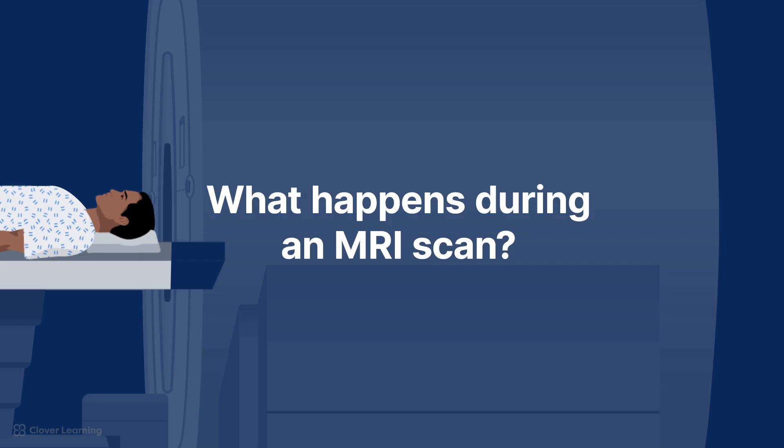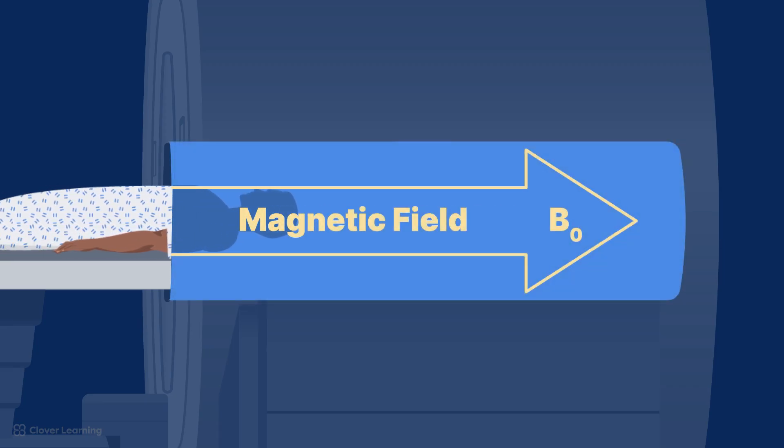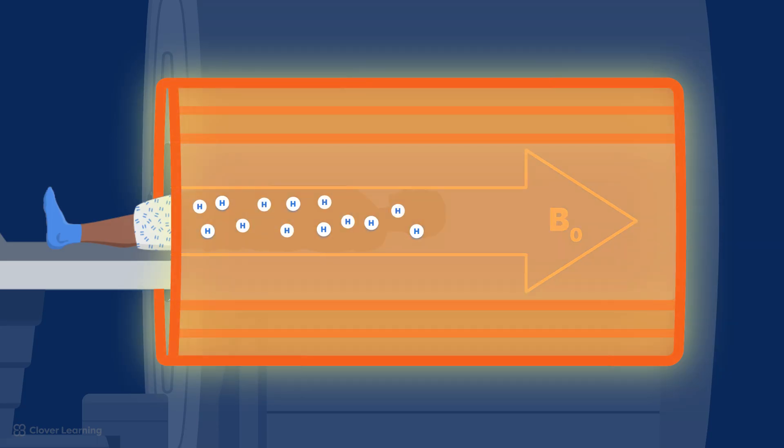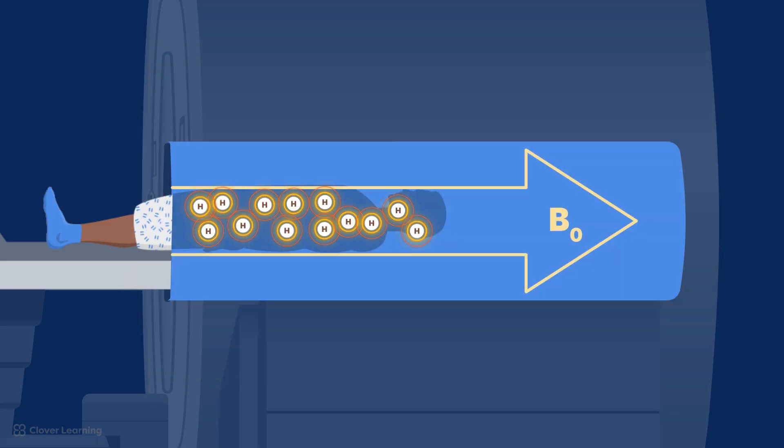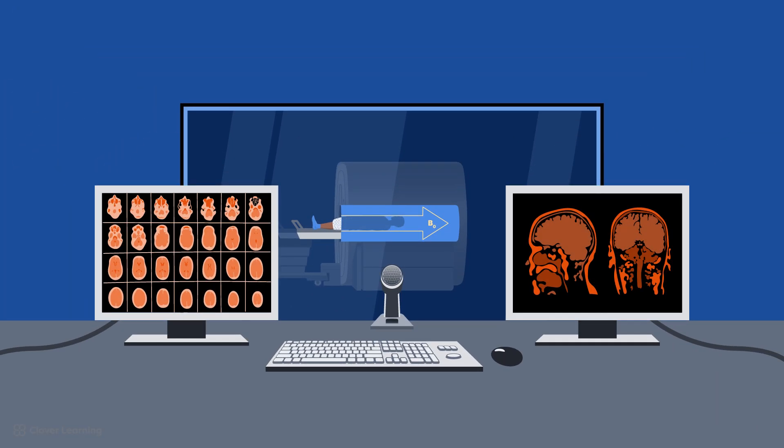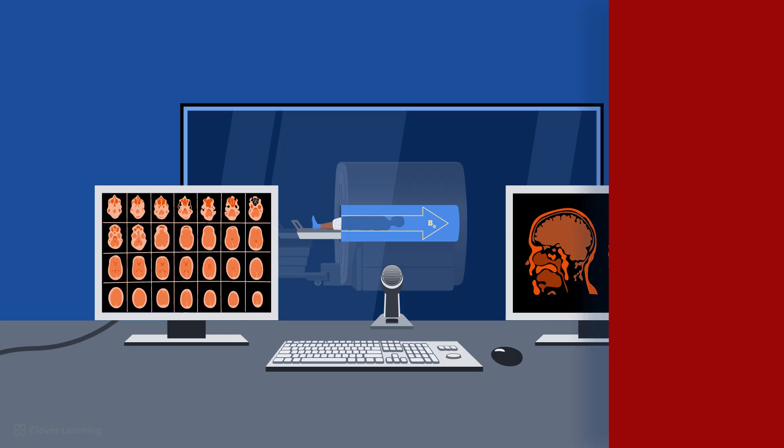So, what happens during an MRI scan? The patient is placed within the bore, which contains the magnetic field, B sub-zero. The hydrogen nuclei in the patient's body align either with or against B sub-zero. This is similar to how the needle of a compass aligns with the Earth's magnetic field. When RF pulses are applied, these nuclei absorb energy from the pulse. Once the RF pulse is stopped, the nuclei return to their original state, releasing the energy from the RF pulse as a signal that is detectable by the MRI scanner. The released signal is then converted into an image, providing a detailed view of the body's internal structures.